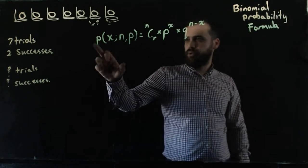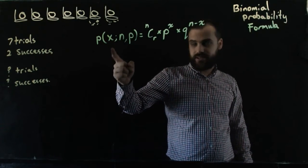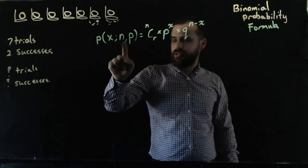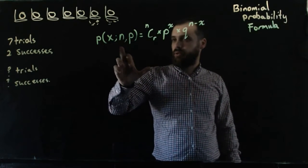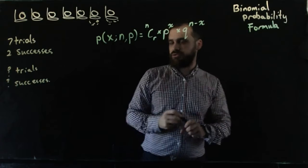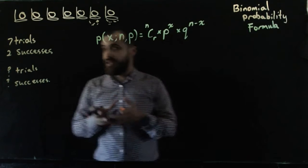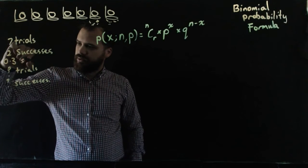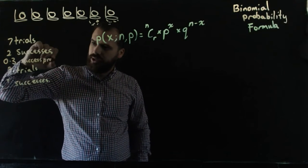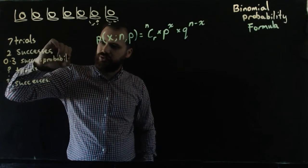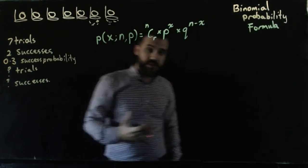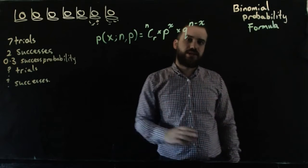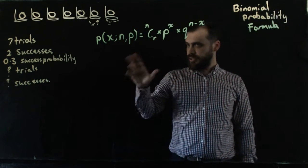Now, this says the probability of x successes, so in this case, two successes, from seven trials. N is for trials, when the probability of your success—remember we said that your probability for an individual success was 0.3 success probability. That's on each individual attempt at the basket. You have a 0.3 chance, a 30% chance.